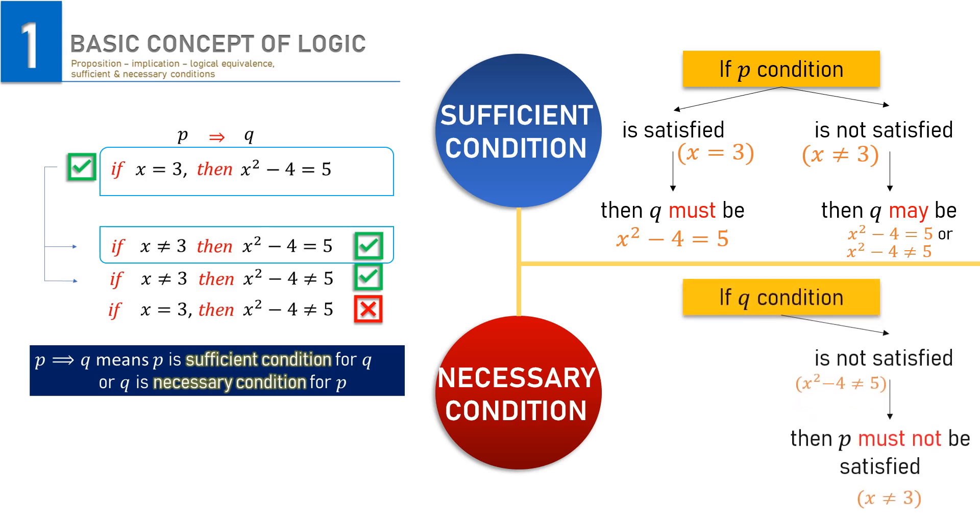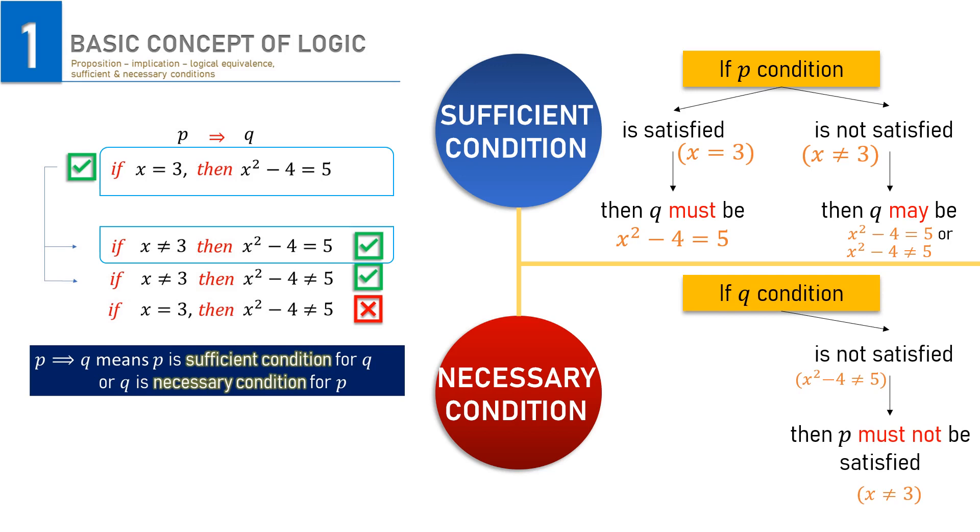If Q is not satisfied, then P must not be satisfied either. If x squared minus 4 is not 5, then x must be not 3. On the other hand, satisfying Q does not necessarily mean satisfying P. When x squared minus 4 is 5, x can be 3, but it can also be minus 3.